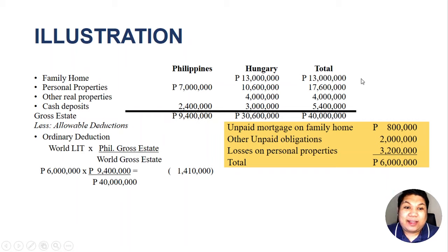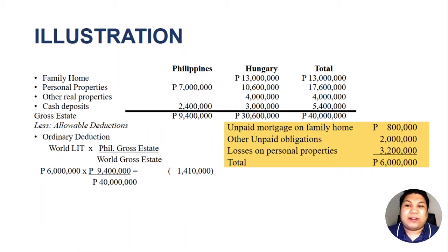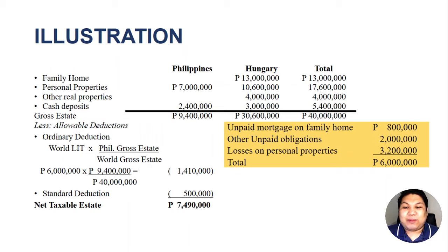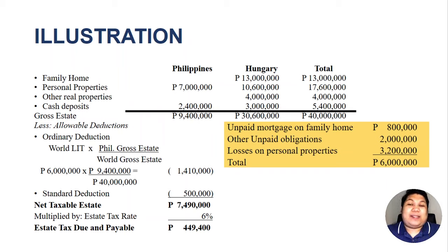After computing ordinary deductions, there is no vanishing deduction and no transfer for public use in this problem. We then deduct the standard deduction of 500,000 pesos — only 500,000 for an NRA. There is also no family home deduction since the decedent was not a resident of the Philippines. These are the only deductions from the gross estate. Therefore, the net taxable estate is 7,490,000 pesos. Multiplying by six percent, the estate tax due and payable is 449,400 pesos.